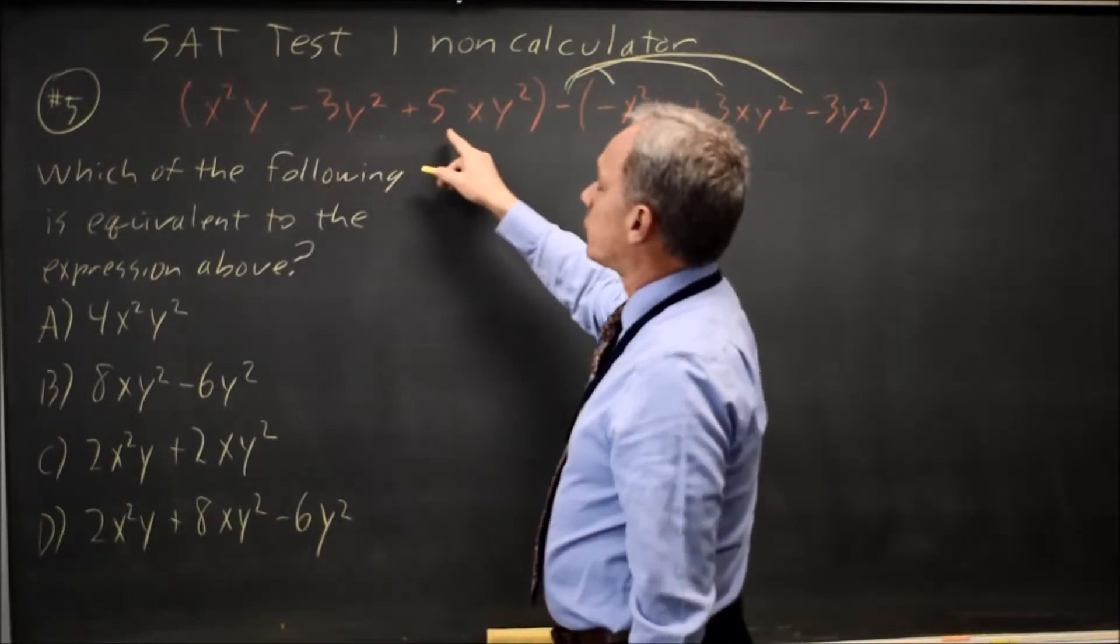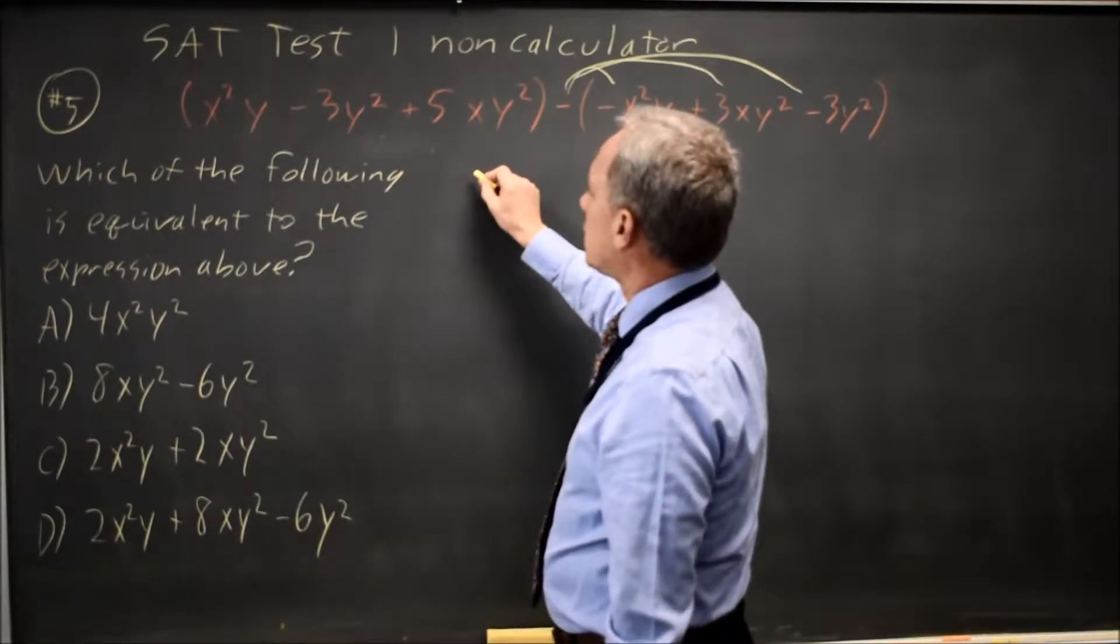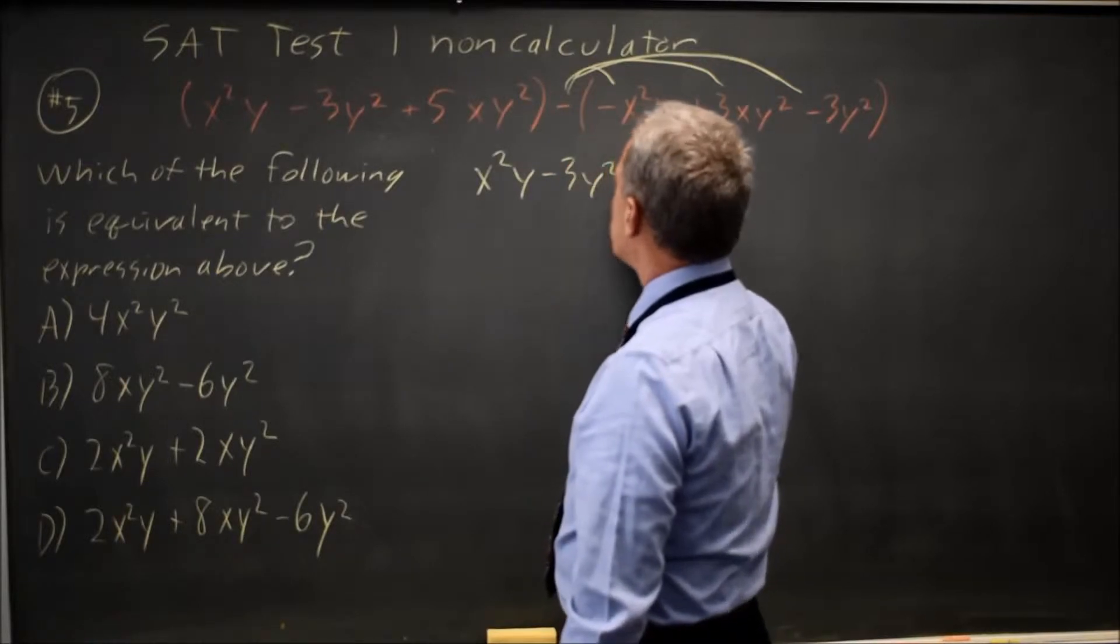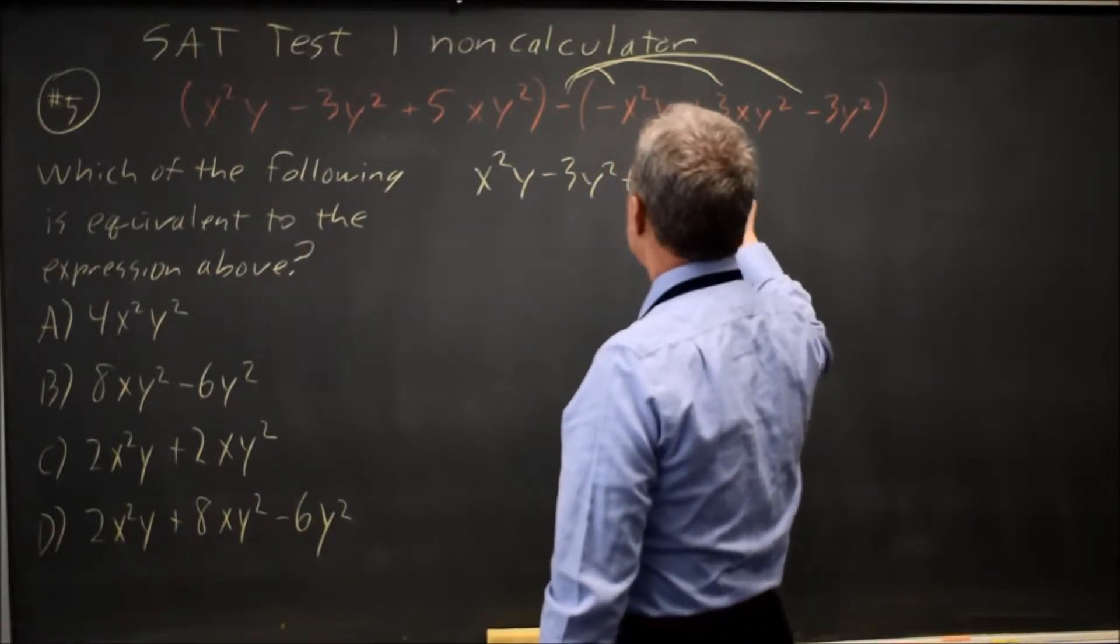So I'll recopy the first expression without the parentheses because I don't need those. It's x squared y minus 3y squared plus 5xy squared.